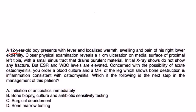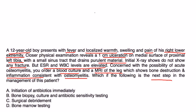A 12-year-old boy presents with fever, localized warmth, swelling, and pain of his right lower extremity. Physical exam reveals a one-centimeter ulceration on the medial surface of the proximal left tibia with a small sinus tract draining purulent material. X-ray shows no fracture, but ESR and WBC are elevated. Concerned about acute osteomyelitis, you order blood culture and MRI, which show bone destruction consistent with osteomyelitis. What's the next step?